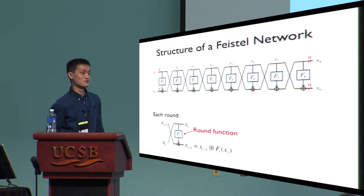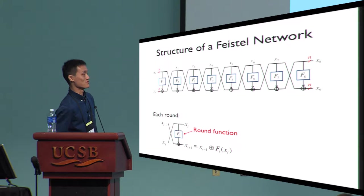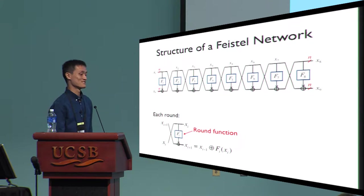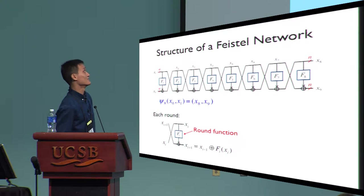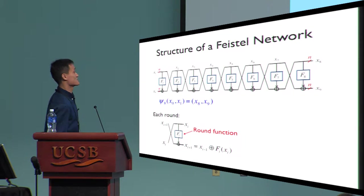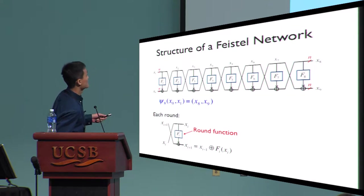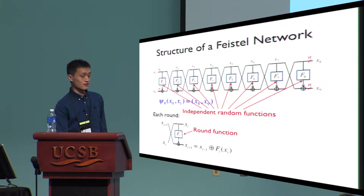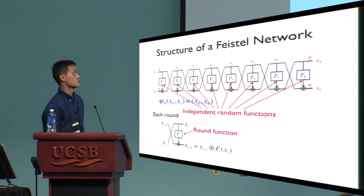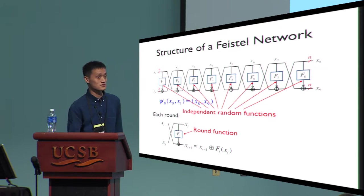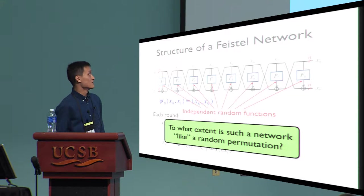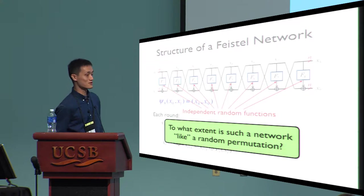We call f_i a round function. Each round is a permutation, regardless of whether the round function itself is or is not a permutation. The Feistel network is a two-n-bit permutation with input x_0, x_1 and output x_8, x_9. In this talk, we will assume the round functions are independent random functions. The question is: to what extent is such a network like a random permutation?